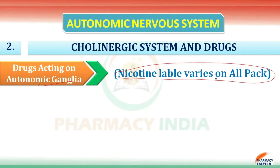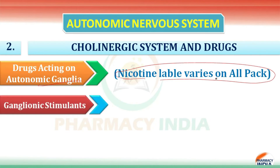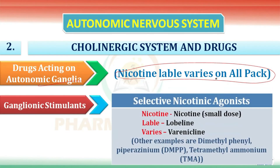The first class of drugs acting on autonomic ganglia is ganglionic stimulants. The first subclass is selective nicotinic agonists. The first drug is nicotine in small doses, and the second is lobeline.